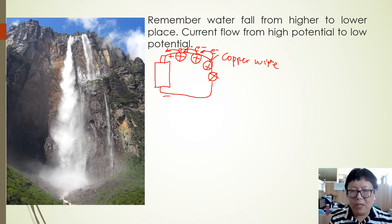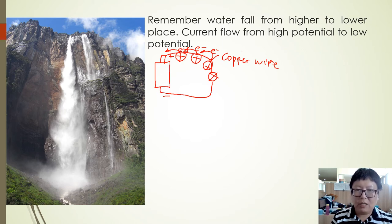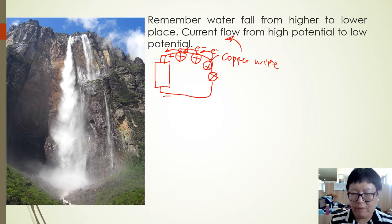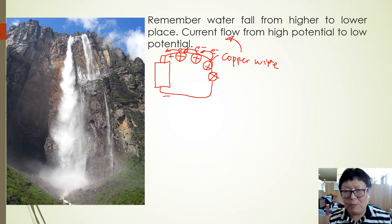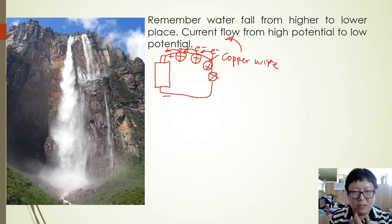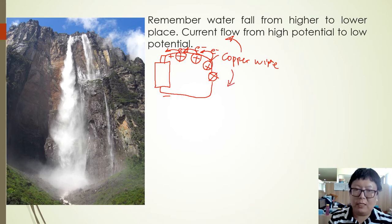If we look at the movement of electrons, we can say that the electron moves from negative to positive. But if you look at the positive one that moves — remember, protons never move, it only depends on our point of view — then this is what we call the conventional current.